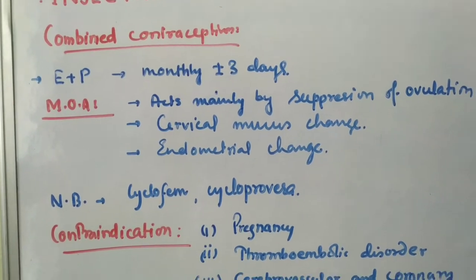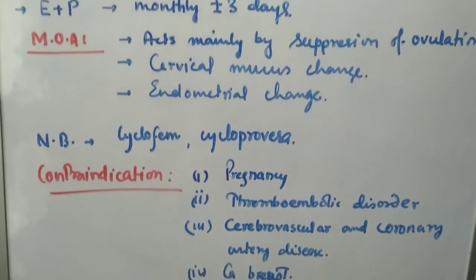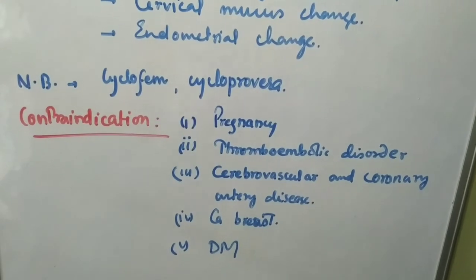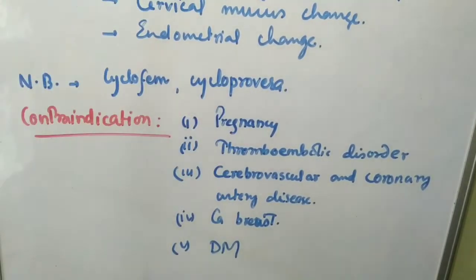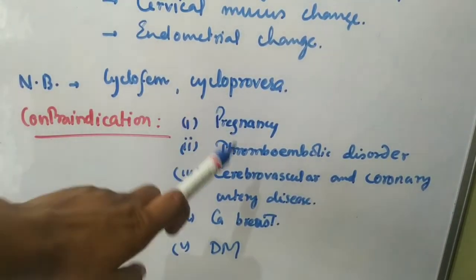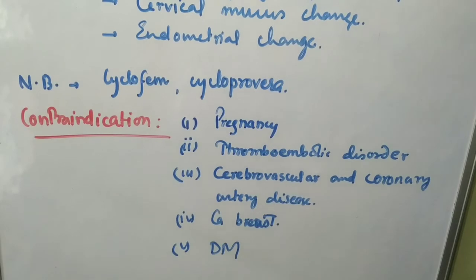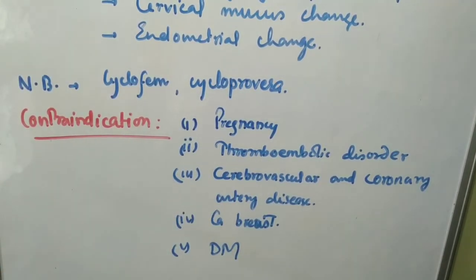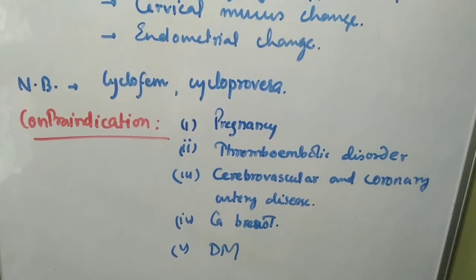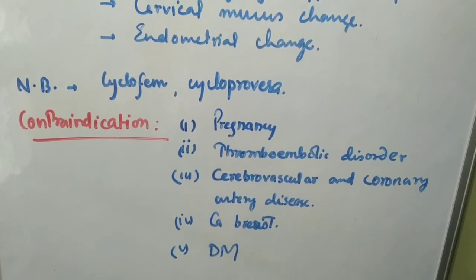Contraindications for combined injectable contraceptives: they cannot be given in pregnancy, thromboembolic disorder, cerebrovascular and coronary artery disease, cancer of the breast, or diabetes mellitus. I hope this video helps. Subscribe to the channel, and if you have any questions, you can ask them in the comment section. Thank you.